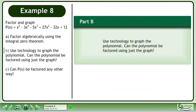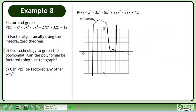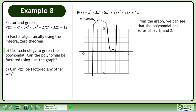In part B, use technology to graph the polynomial. Can the polynomial be factored using just the graph? Use your graphing calculator to obtain the graph. From the graph, we can see that the polynomial has zeros of -3, 1, and 2.